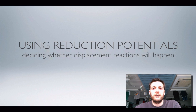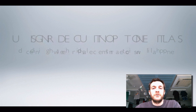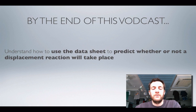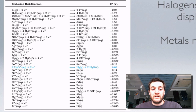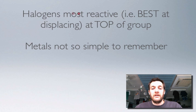Hello and welcome to this film which is all about using your datasheet to predict whether reactions will happen or not. Hopefully by the end of this film you'll be able to use the list of standard reduction potentials found on your datasheet to predict whether or not a certain metal or halogen displacement reaction will take place. You don't have to use your datasheet — you could just memorize which metals or halogens are able to displace others — but this information is on your datasheet if you want it. You've got a choice: you can use this list of reduction potentials, which is very similar to what's on your datasheet, or you can use your memory.